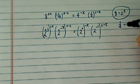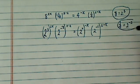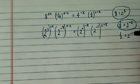1 fourth is 2 to the minus 2, and 1 half is 2 to the minus 1. Those are the properties I used.